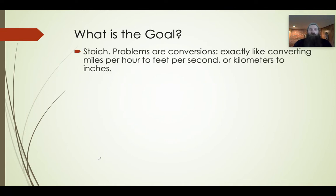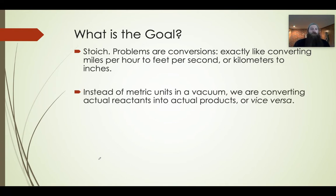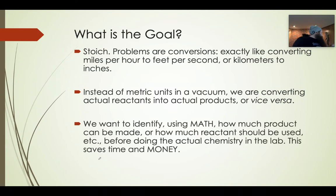What's the goal? Well, it's a conversion — just like you would convert miles per hour to feet per second, or ounces to pounds, or centimeters per second to light years per hour. However, these are not arbitrary conversions — they're not metric units in a vacuum. We're doing actual reactants into actual products using a real chemical reaction. We're going to identify using math how much product can be made or how much reactant would have to be used before we do actual chemistry in the lab.